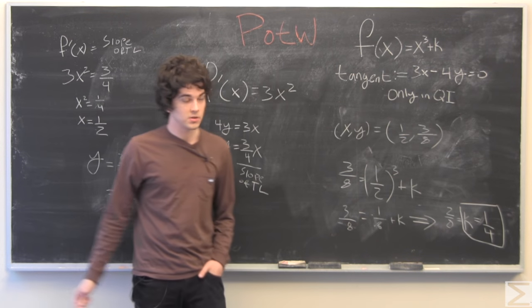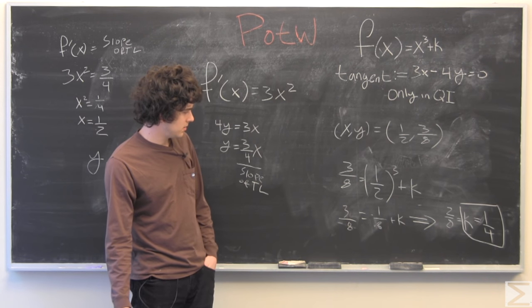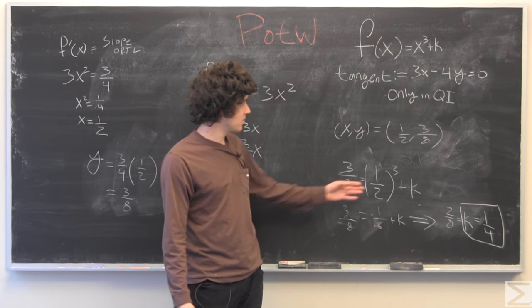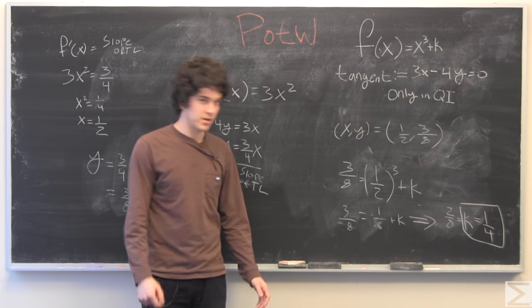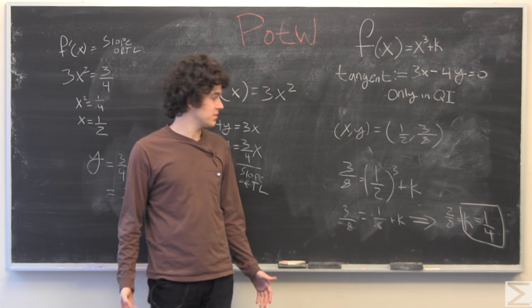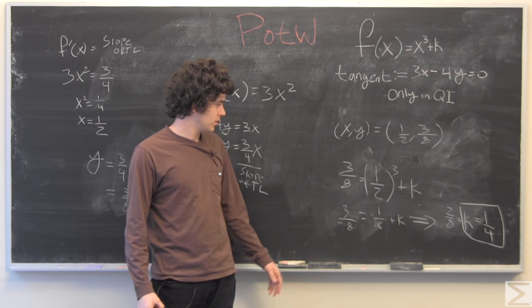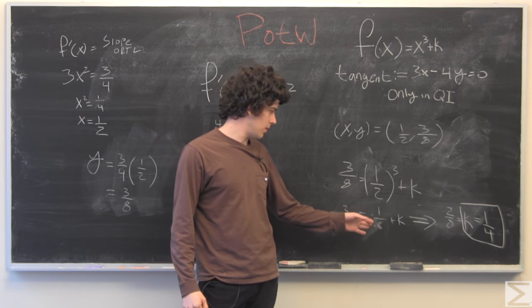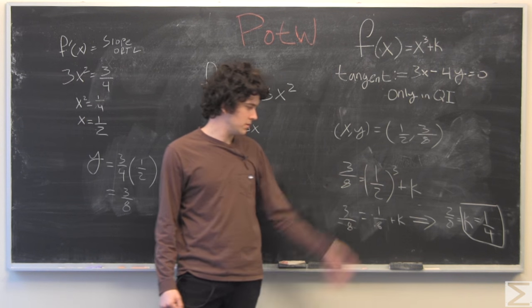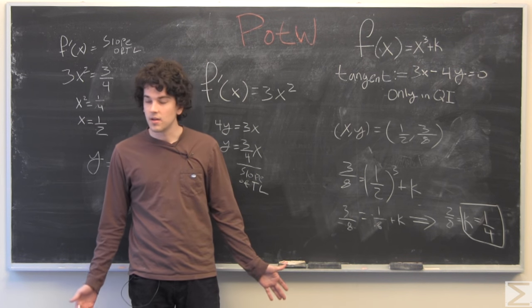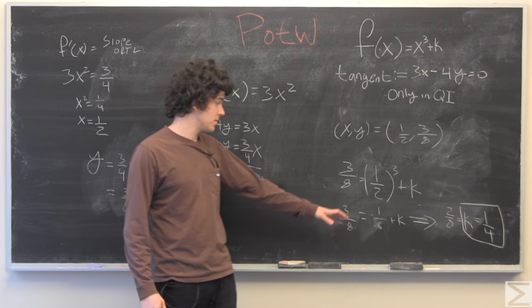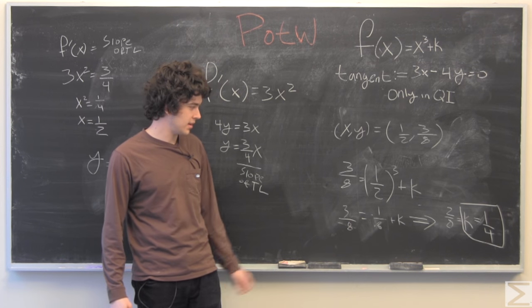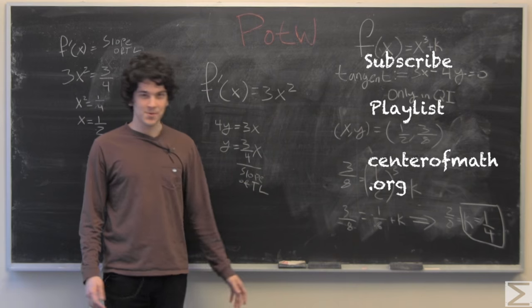Once we put in x and y into this, y of course being f(x), we have 3/8 = (1/2)³, which is 1/8, which is nice because it's a common base, and we can just subtract 1/8 from both sides and get k = 1/4. Thank you for watching this week's problem of the week.